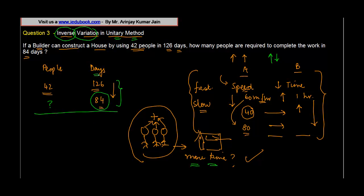What you need to notice is that the variable which is given, the number of days, has to be taken on the left hand side. So in 126 days, 42 people can complete the work. But if you have to complete the work in one day...